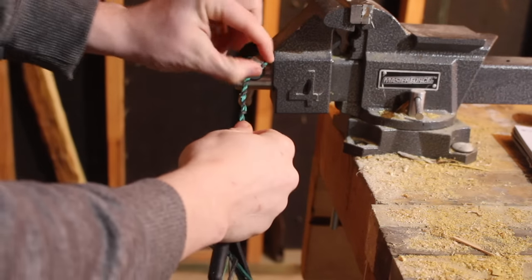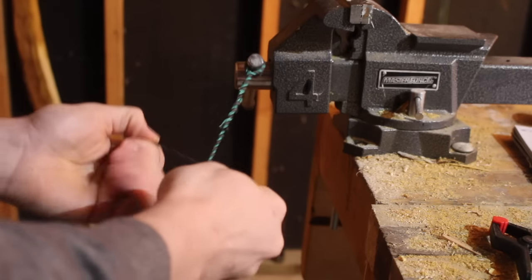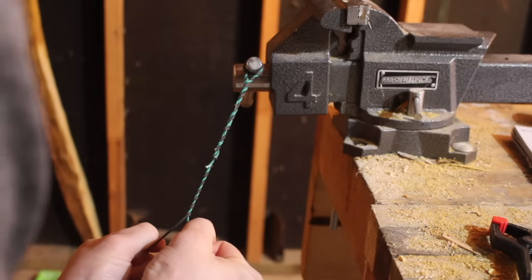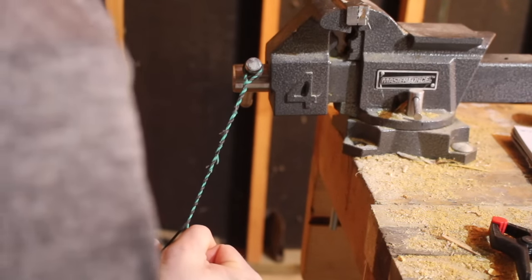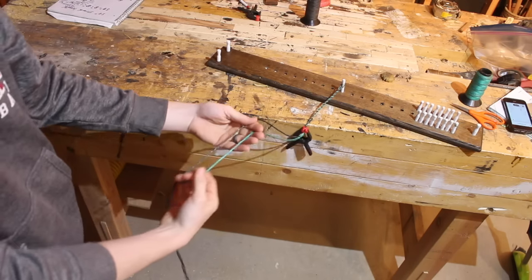At this point it's a good idea to put your loop over something solid and give it a really good tug. This will set all those twists in and keep it from unraveling. Now that completes the first loop and this bowstring is looking awesome.